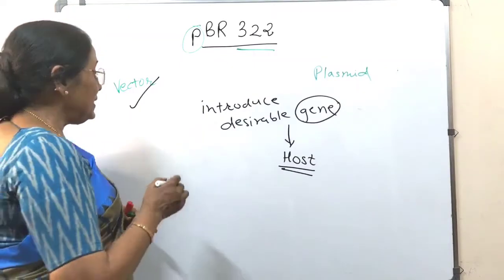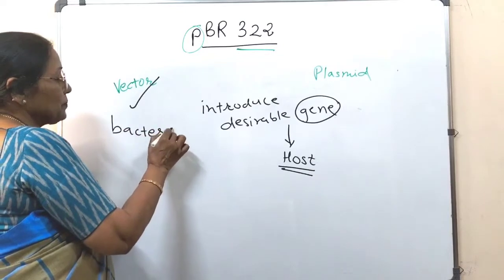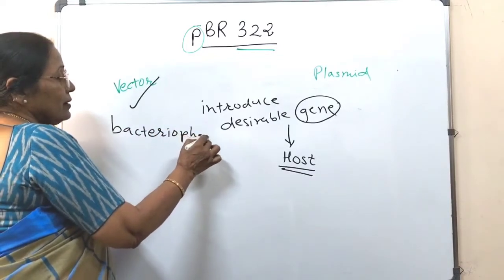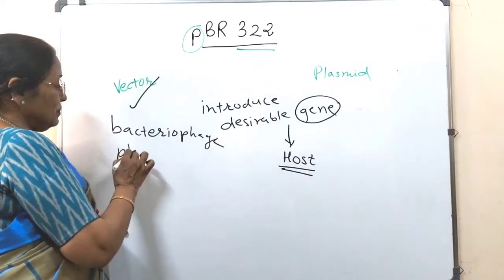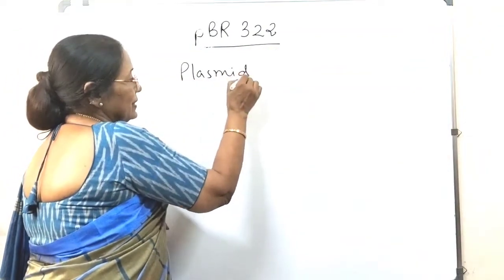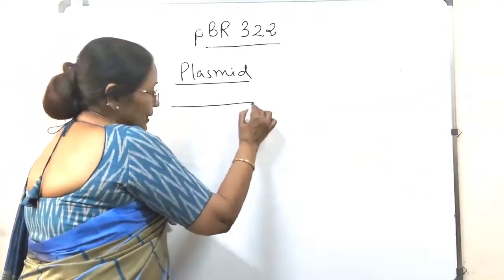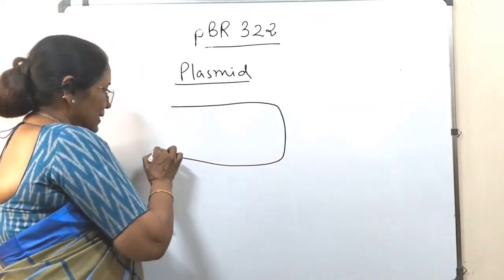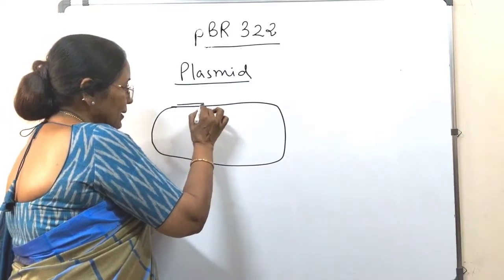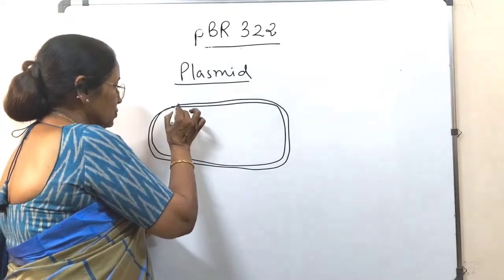These vectors may be of many types. It may be a bacteriophage. It may be a plasmid. What is the plasmid? Plasmid, this you have studied in class 11th. Now, in bacteria, not in all bacteria, in some bacteria, there is one extra chromosome.